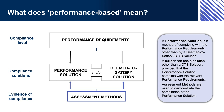A performance solution is another method of complying with performance requirements, other than by a deemed-to-satisfy solution. If the designer or builder wants to do something different, theoretically there are no restrictions on what solution they choose — what materials they use and what building techniques they employ. The resulting building just needs to meet all of the relevant performance requirements. It is also possible to use a combination of a DTS solution and a performance solution. When using a performance solution, the designer must demonstrate how it complies with the relevant performance requirements through the use of assessment methods.